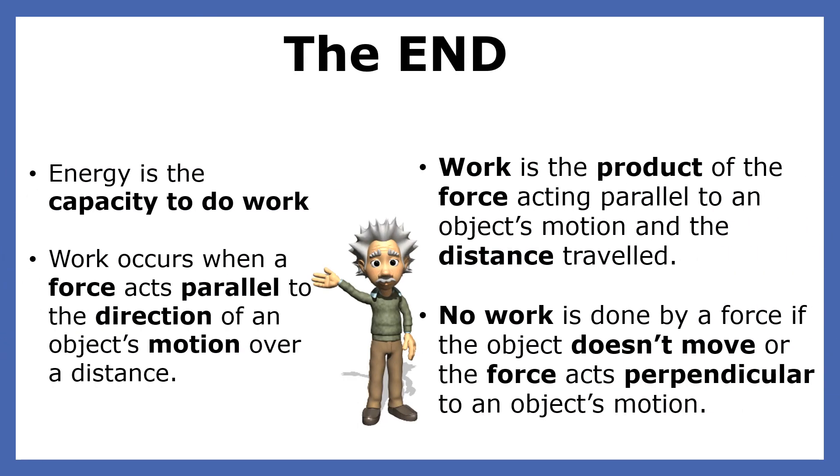Let's go over what you've learned in this presentation. Energy is the capacity to do work. Work occurs when a force acts parallel to the direction of an object's motion over a distance. Work is the product of the force acting parallel to an object's motion and the distance traveled. No work is done by a force if the object doesn't move or the force acts perpendicular to an object's motion.